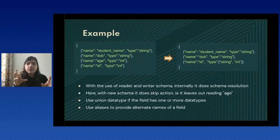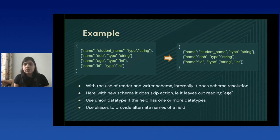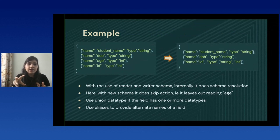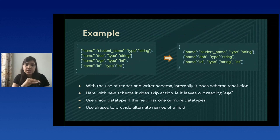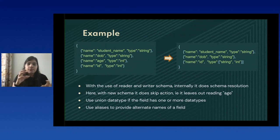Similarly, in version three of the schema, if date of birth is removed, using version three you would still be able to read version one data — it would skip the date of birth column. That's how Avro handles data type changes and removal of fields. Adding new fields can also be taken care of. There is also an interesting feature of providing aliases — if my field name ID is now changed to ID underscore, in version two I can define that ID underscore has an alias of ID, so reading older data maps the ID value into the ID underscore column.